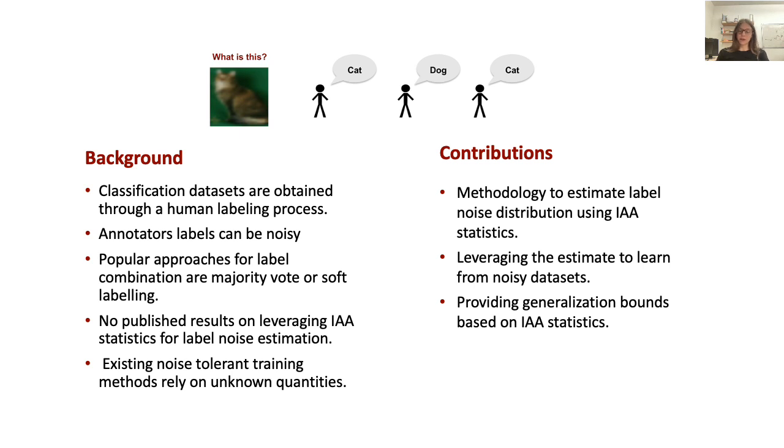In this work, we explore the fact that the inter-annotator agreement is directly related to the noise rate of the annotators, and this allows us to estimate the error rate using inter-annotator agreement statistics, and then leverage this estimate to modify the learning process, thereby making them more robust to label noise.